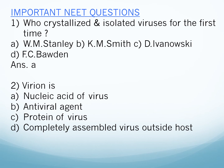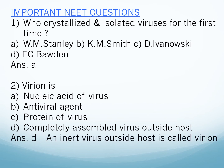Question two: Virion is — A) nucleic acid of virus, B) antiviral agent, C) protein of virus, D) completely assembled virus outside host. The answer is option D. An inert virus outside the host is called a virion.